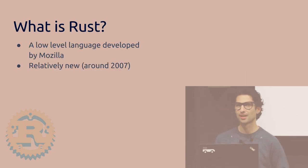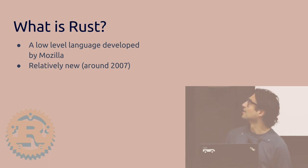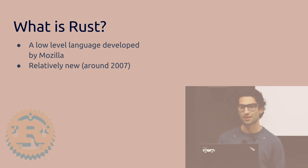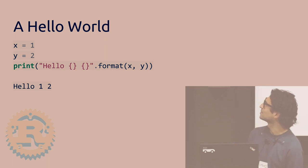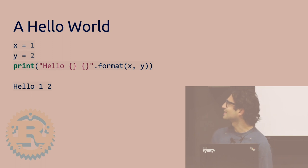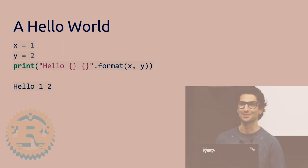So, what is Rust? Rust is a programming language developed by Mozilla. It's a low-level language, and it's relatively new, around 10 years old. This is a simple Hello World application, except we're going to be printing some numbers instead of Hello World. So this is in Python, by the way.